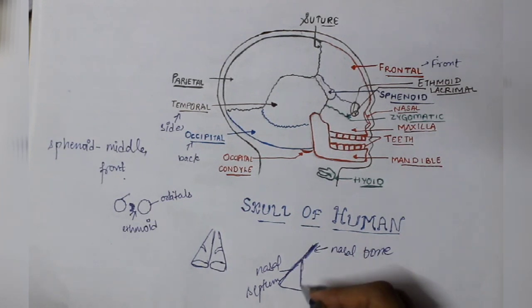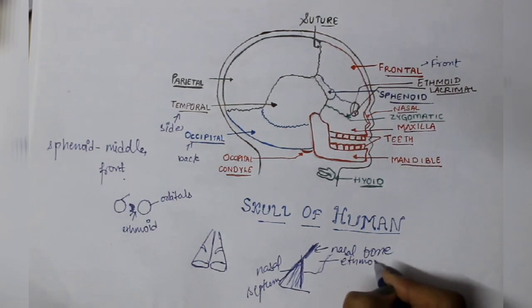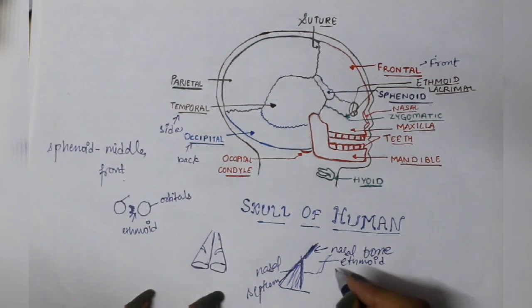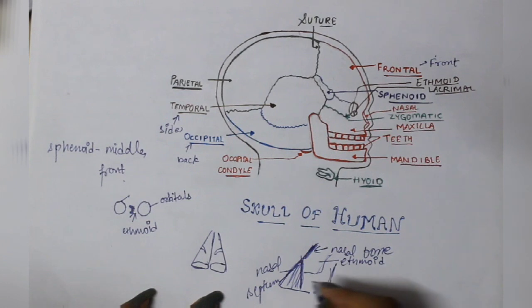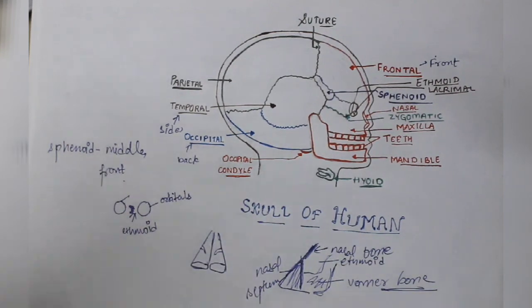Then the vomer bone comes. The vomer bone is also present in the inner part. If we look at the nose structure above, the upper part is nasal bone. The lower part is the nasal septum. What does it do? The nose is divided into two parts. The entire region separating them is called nasal septum, in which vomer bone is present.